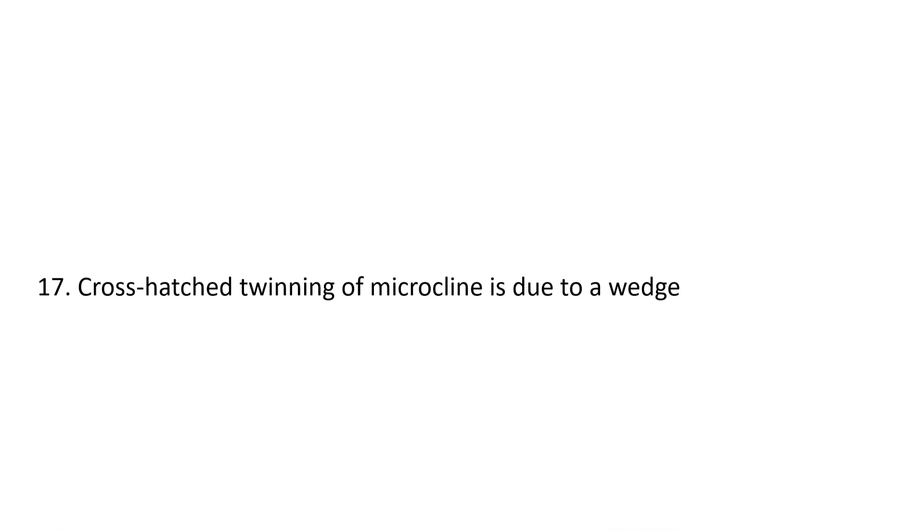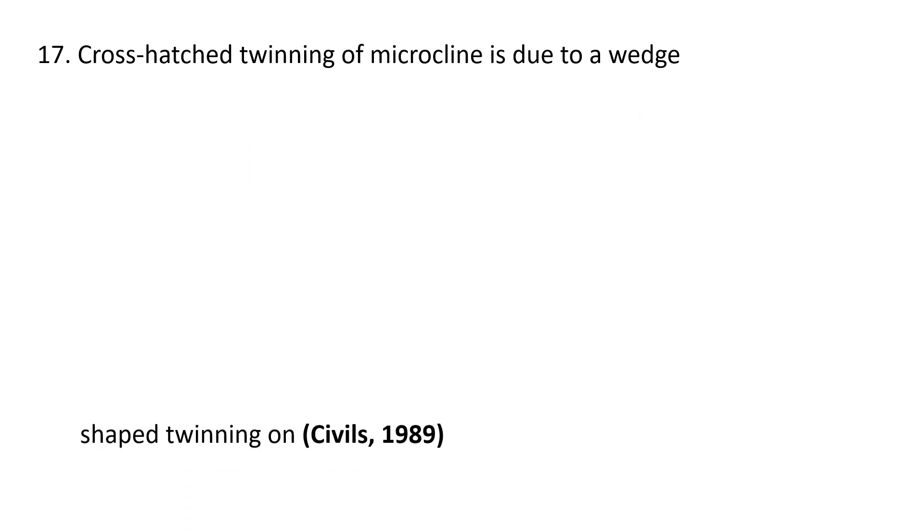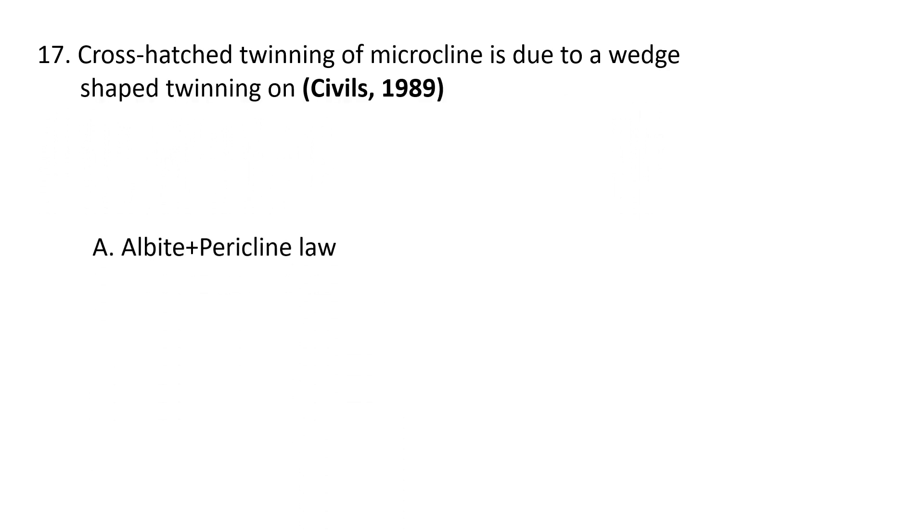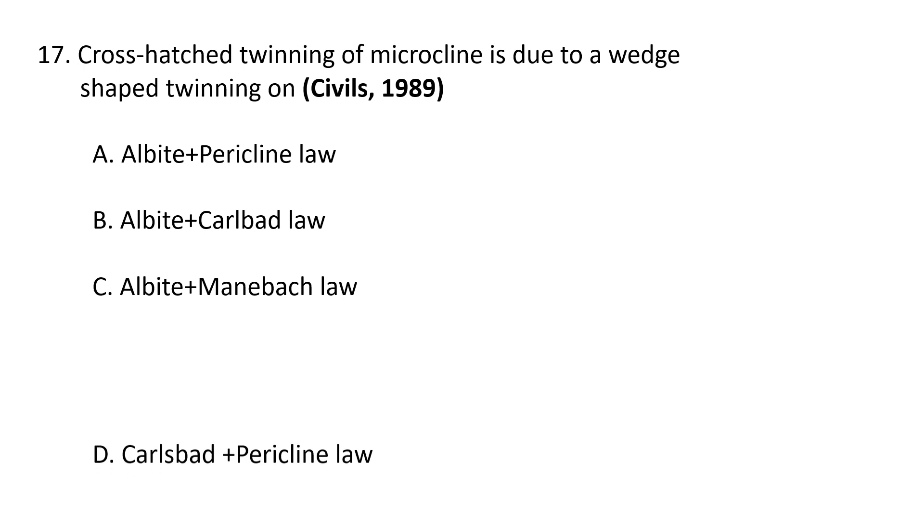Next question. The cross hatch twinning of microcline is due to wedge shaped twinning on: A. Albite and pericline law, B. Albite and Carlsbad law, C. Albite and Manebach law, D. Carlsbad and pericline law. So correct answer is A. Albite and pericline law.